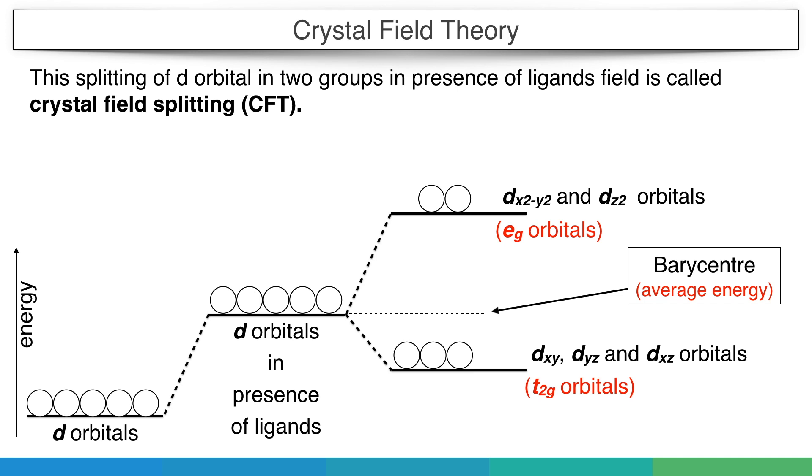As the barycenter or average energy is constant, the number of electrons with increased energy must equal the number of electrons with decreased energy. Therefore, if two orbitals show an increase of 6Dq, at the same time, three orbitals should show a decrease of 4Dq. Then only the average of all five orbital energies will equal the barycenter or average energy.